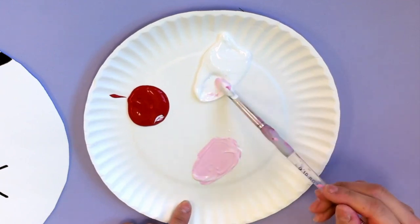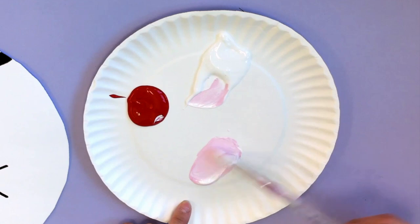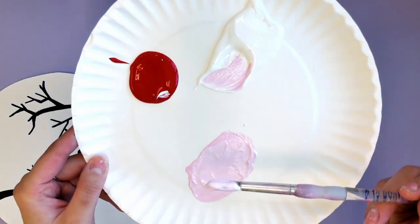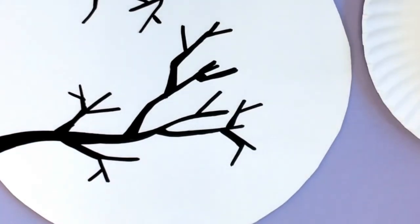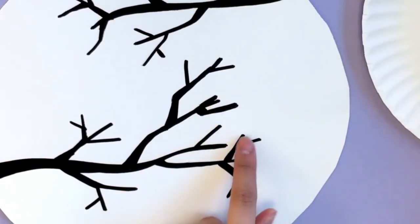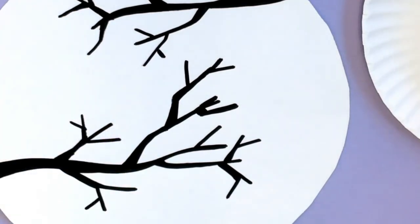Once I have that, I'm going to go ahead and on my paper, I'm going to make my flowers at the end of my branches. And I'm going to make this by making tiny little stars.